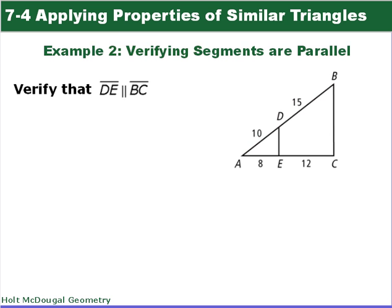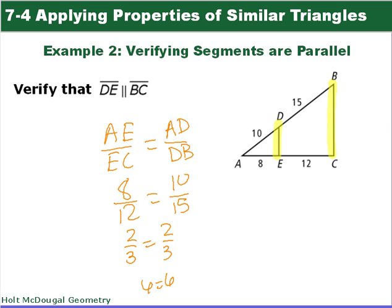We're going to verify that segment DE is parallel to BC. So we want to show that these guys are parallel. To do that, we show that the sides are, the corresponding parts are proportional. So AE is to EC as AD is to DB. And let's fill everything. Okay, so what we're looking for, we end up with a true equation here, and that means that they're proportional. So we plug in our values. We get 8 over 12 equals 10 over 15.